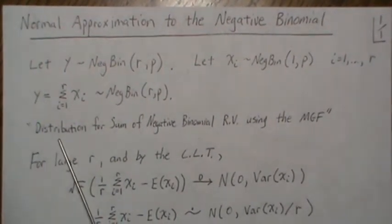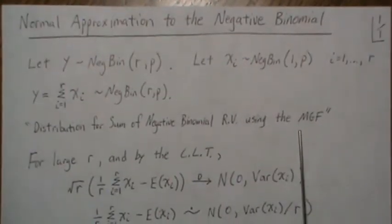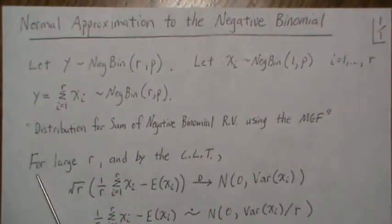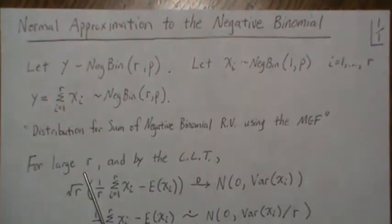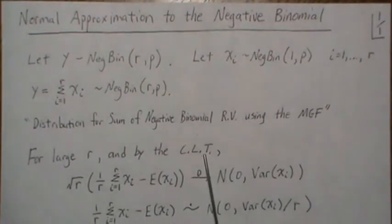And we illustrated this in this video that I call distribution for sum of negative binomial random variables using the moment generating function. Now in this video we're going to assume that r is large, and also we're going to use the central limit theorem.